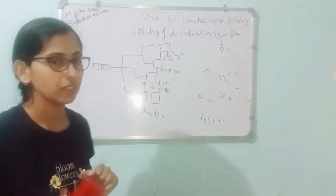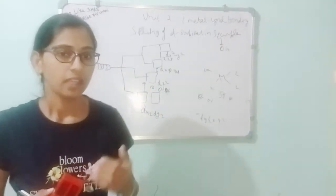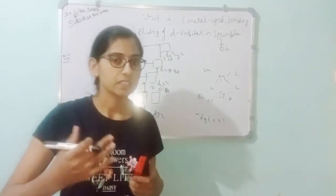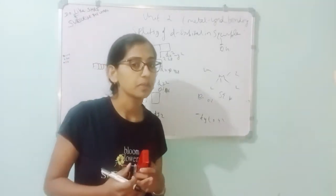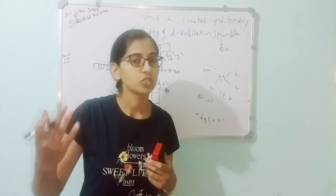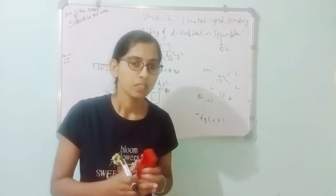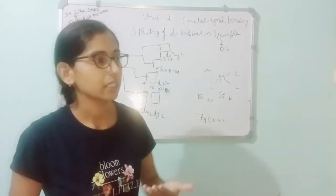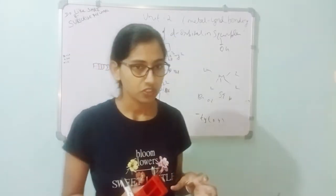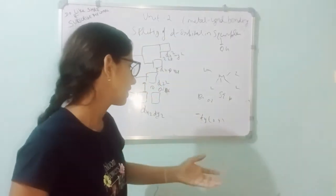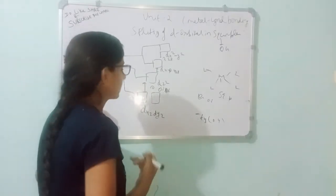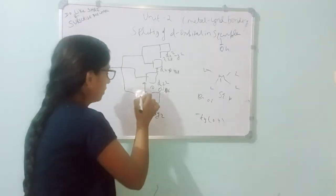For square planar complexes, a common example uses platinum, which has a D8 configuration and mostly shows square planar geometry. If you use a D8 configuration with 8 electrons, you fill the orbitals. First you can see that D8 means 8 electrons, and you fill them one by one.